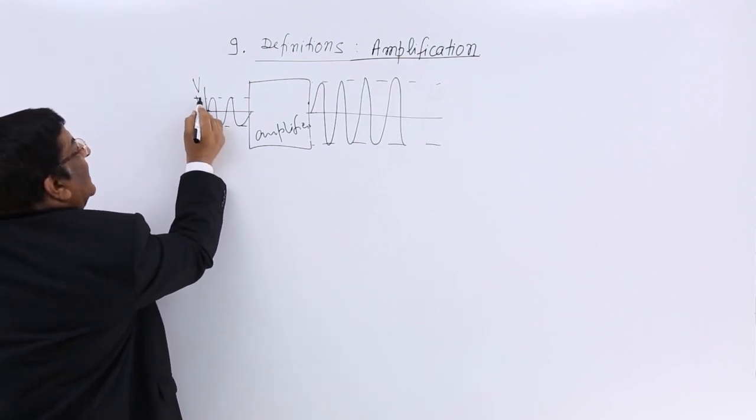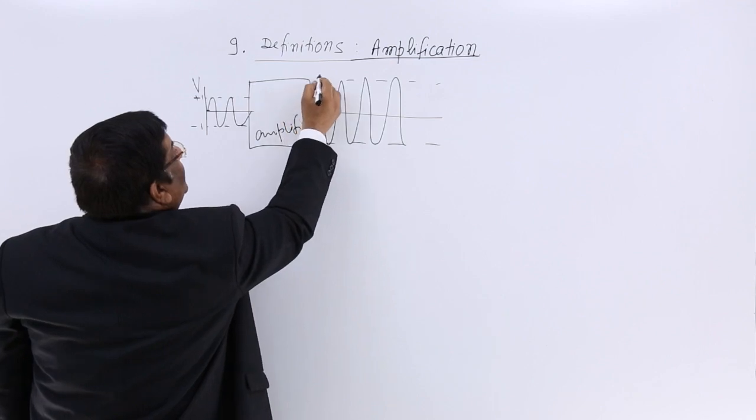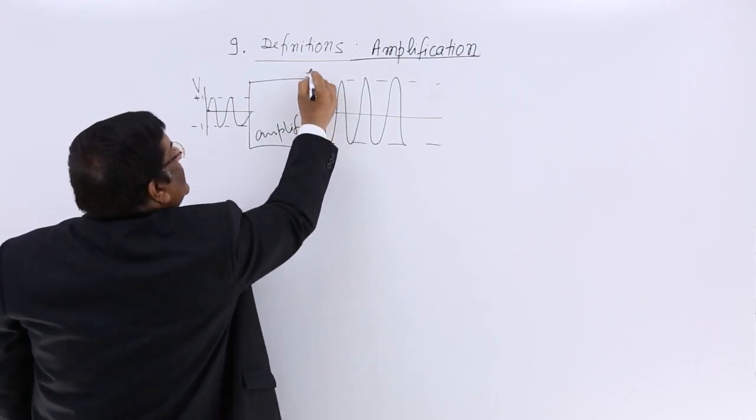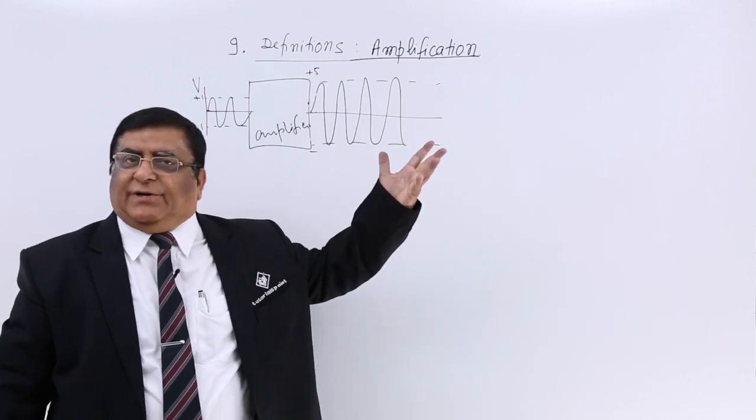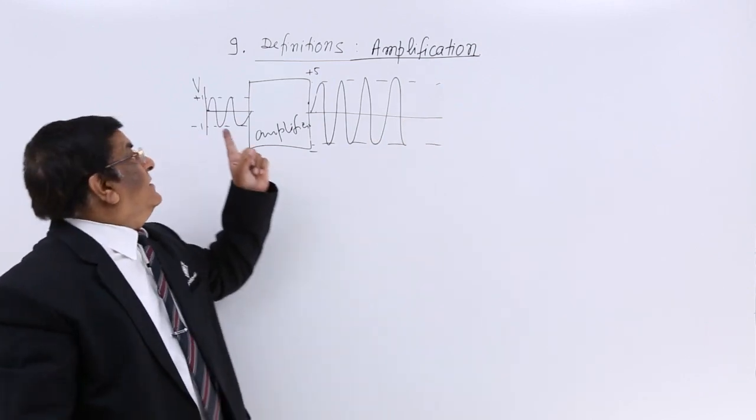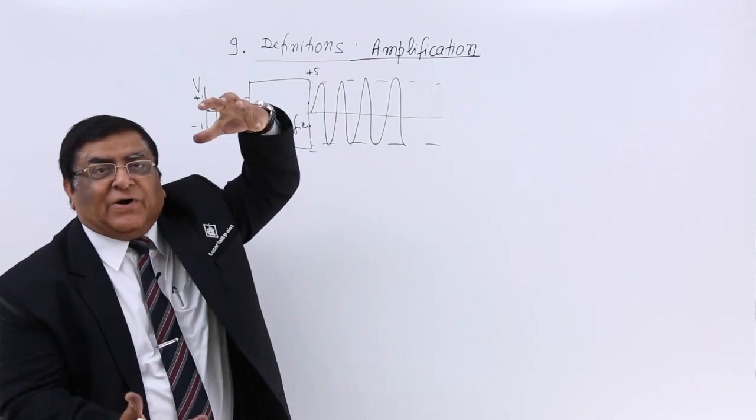If this was plus minus 1 volt, now it is plus minus 5 volt, plus minus 10 volt, plus minus 100 volt, plus minus 200 volt, whatever it is. But this is multiplied, this is amplified.